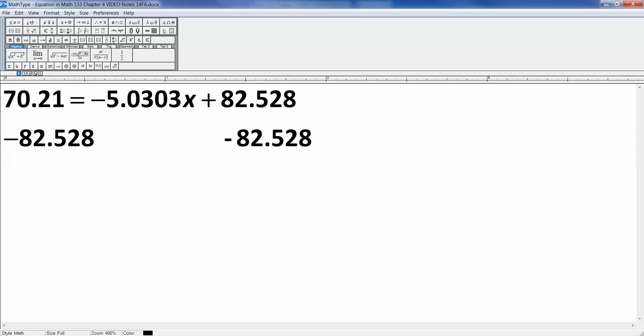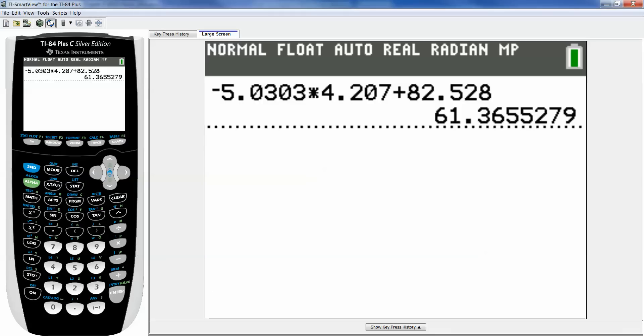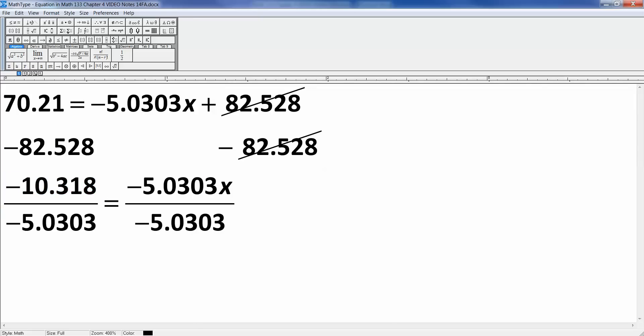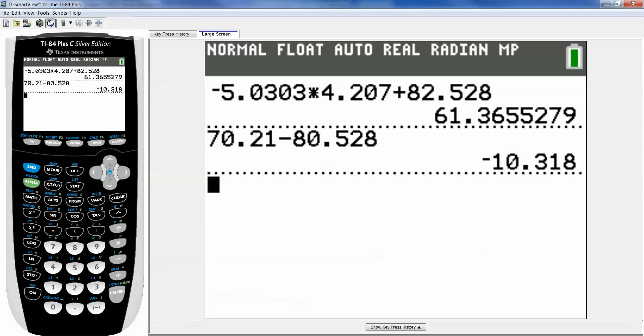You're doing it so that these two will go away, right? So you'll have 82.528 and minus 82.528 will go away. It'll leave you whatever this number is over here. So let me grab the calculator. 70.21 take away 82.528 gets me negative 10.318. So I have negative 10.318 equals negative 5.0303 X. Then I'm going to divide both sides by negative 5.0303. And of course, I do it to the left. I have to do it to the right. And you do it over here so that way these disappear because 5.03 divided by 5.03 goes away to 1. So we need to take 10.318 and divide it by 5.0303.